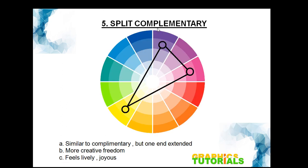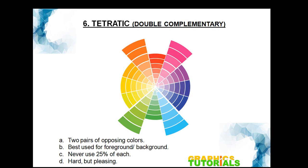The fifth is split complementary. Take any color, find its complementary color on the opposite side, but instead of using that direct complement, you extend the ends — taking the colors on either side of the complement. This creates a V-shape. For example, take blue; its complementary would be orange, but instead take yellow-orange and red-orange. So you get one base color and two extended complementary colors. Similar to complementary but with more creative freedom — feels lively and joyous.